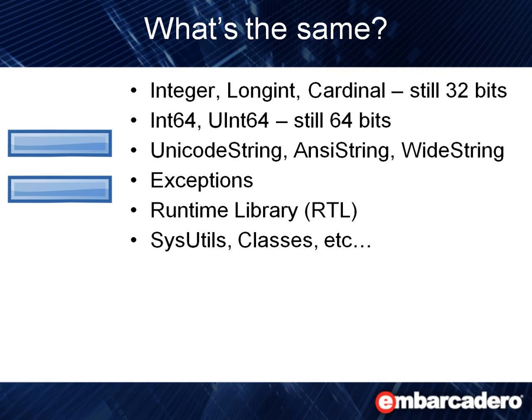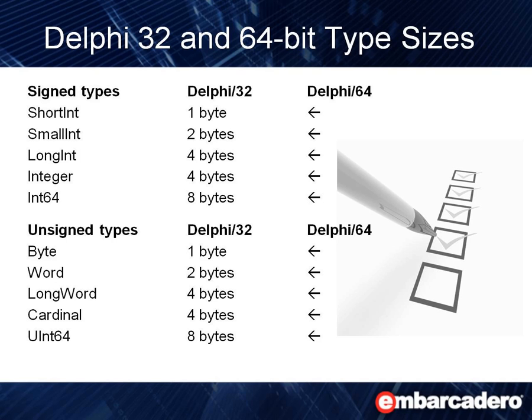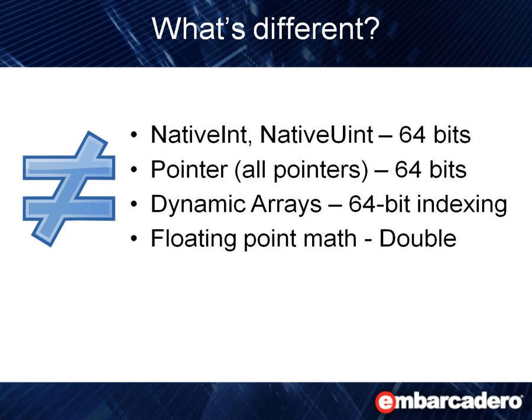The runtime library and all the standard units — SysUtils, Classes, Math — all of those things are the same in 32-bit and will be the same in 64-bit. If we look at the different data types between 32-bit and 64-bit, the arrow shows that it's the same in both. So all the signed types and the unsigned types — all your code that deals with those will be exactly the same.